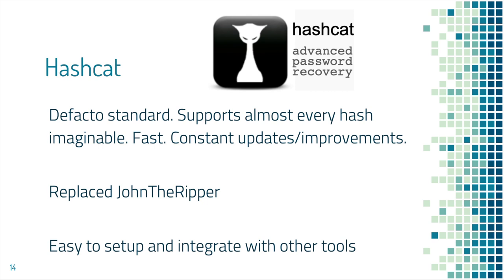Hashcat is now the de facto standard for password cracking. It supports just about every hash imaginable. There was one time I had a weird zip file requiring John the Ripper, but I've never encountered anything on an engagement that Hashcat can't handle. John the Ripper was the standard five to ten years ago — it uses CPU cracking — whereas Hashcat uses GPUs. Hashcat is very well-maintained, constantly updated, with lots of improvements, super easy to set up and integrate with other tools, and there's extensive documentation online.